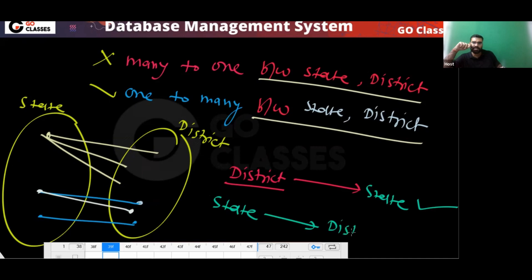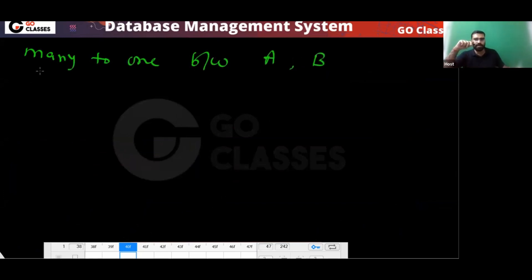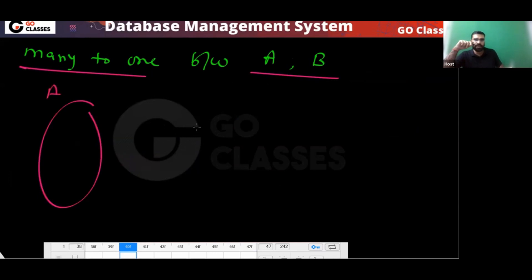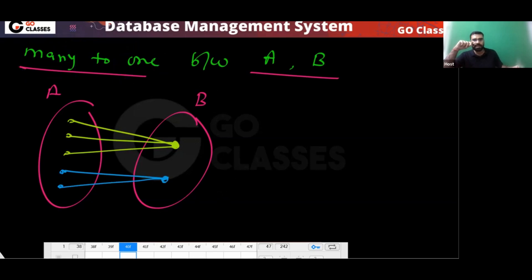If you know the name of a state, you cannot determine the district, because one state has many districts. Now, if you have many-to-one between set A and set B, it means many of A can be related to one of B.